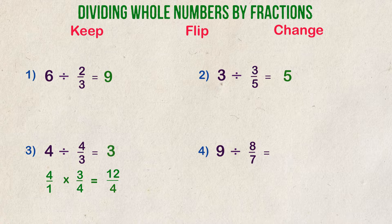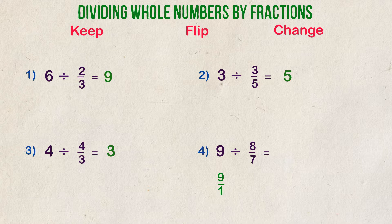Example 4. What is 9 divided by 8 sevenths? Another improper fraction. We place 9 over 1 to put it in a fractional form. We then flip 8 sevenths to be 7 eighths, and we multiply across.